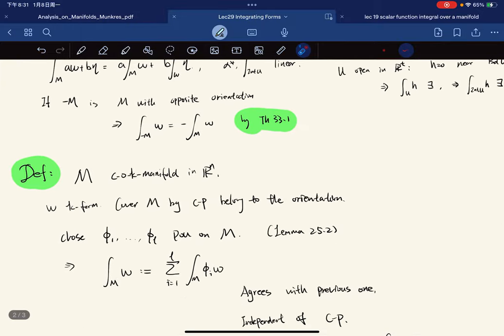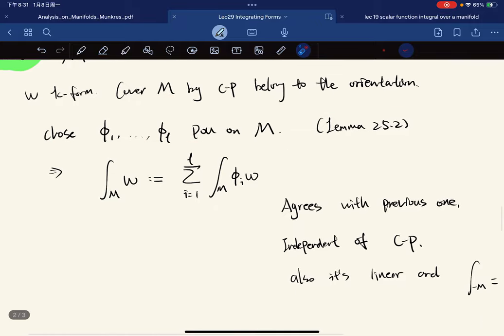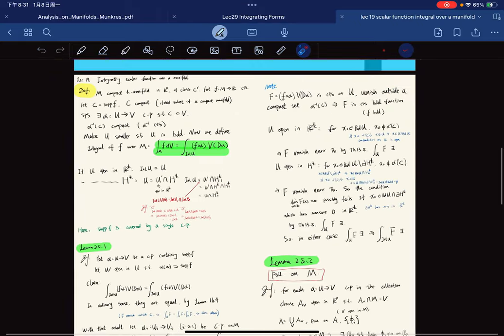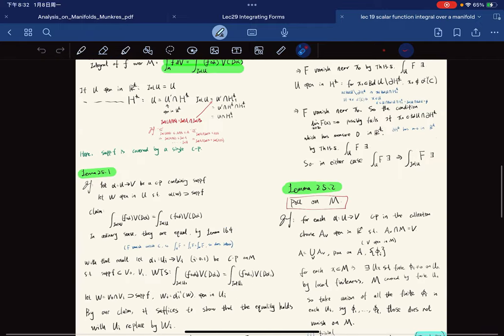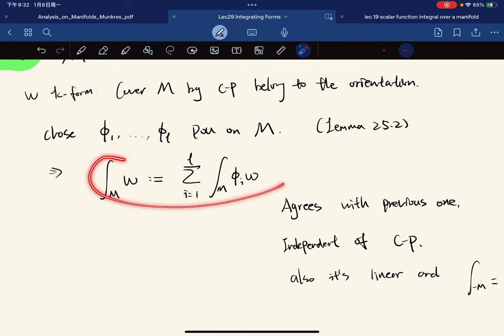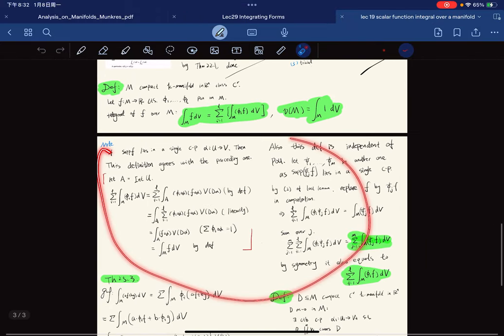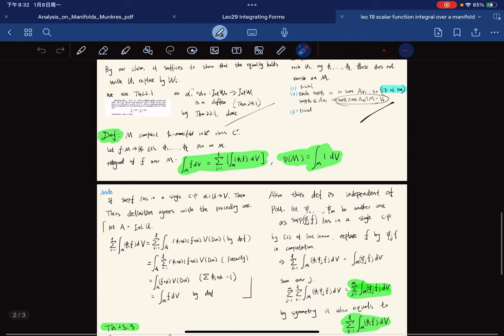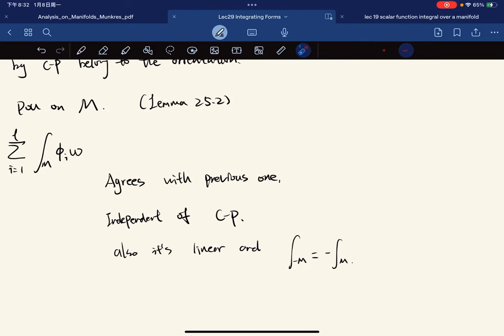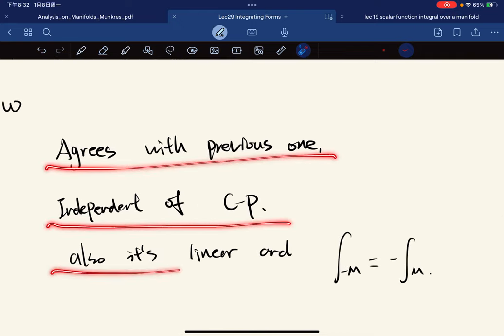If we denote -M to be the manifold with opposite orientation, then we have this by Theorem 33.1 again. Now we're trying to define this in general. In general we have to do partition of unity, which covers M by coordinate patches belonging to the orientation, then we define it like this, very similar to how we defined it before. With all these properties, thanks to the fact that we went through orientations on oriented manifolds, those contents agree with the previous one. It also is linear and we have these two facts.